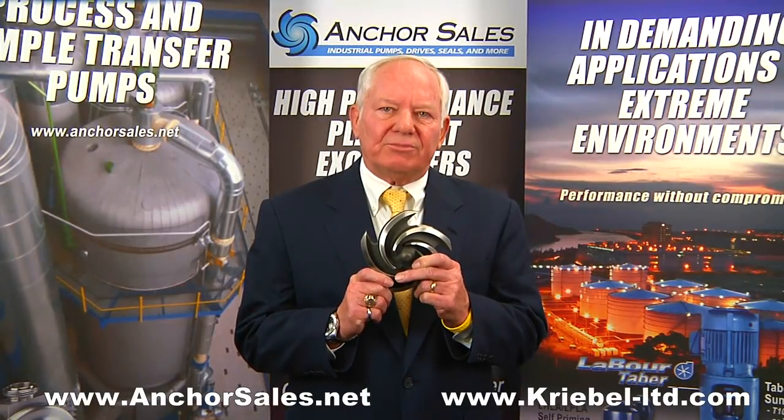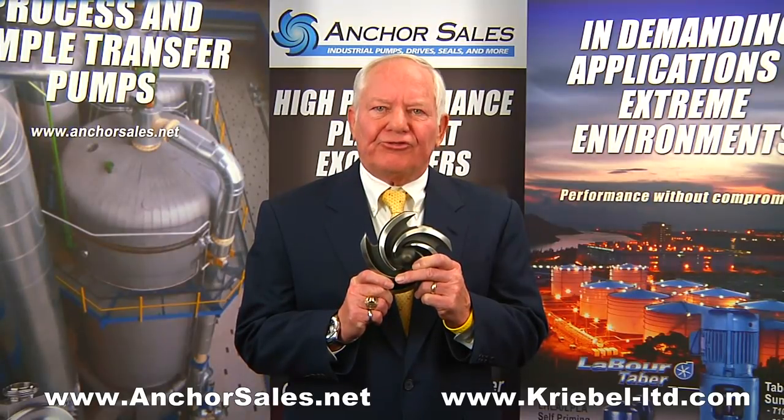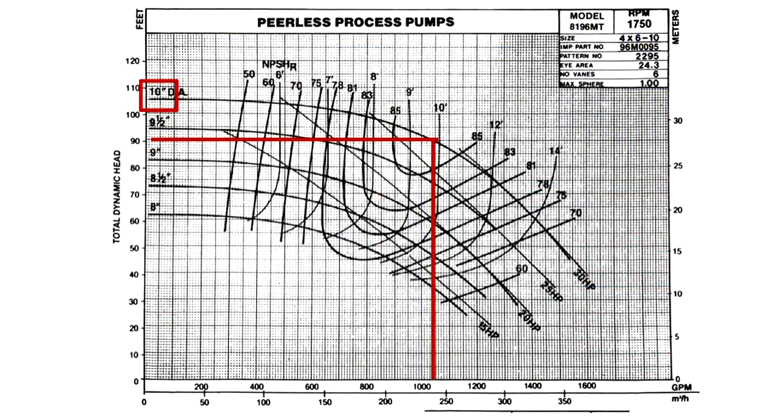Impellers are sometimes referred to as wheels due to their shape. You always read a pump curve from the selected or installed impeller diameter to read the corresponding flow and head. In this case, for a 10-inch impeller at 90 foot, the flow would be 1050 GPM.